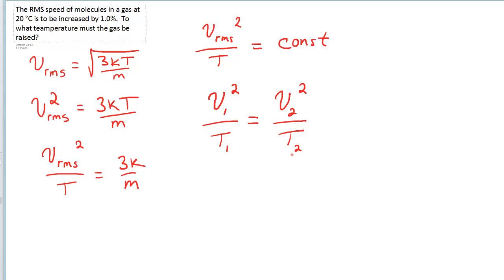Now all it is is a matter of working in our information. The initial temperature T1 is 20 degrees Celsius. But of course we don't want Celsius in physics. We want Kelvin. So we're going to add 273 to this number. And we're going to get 293 Kelvin. That's my initial temperature. There's T1. We're trying to find the new temperature, T2.